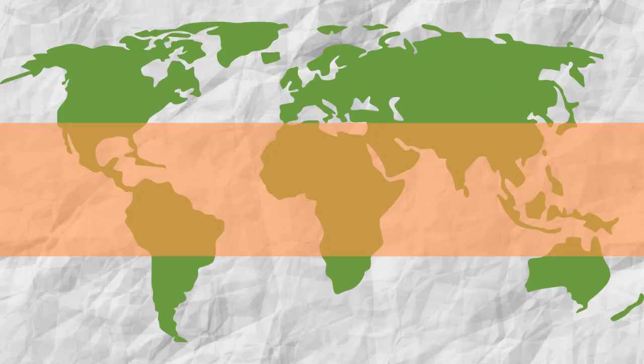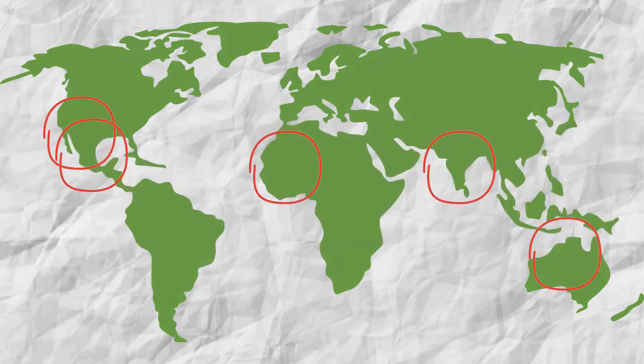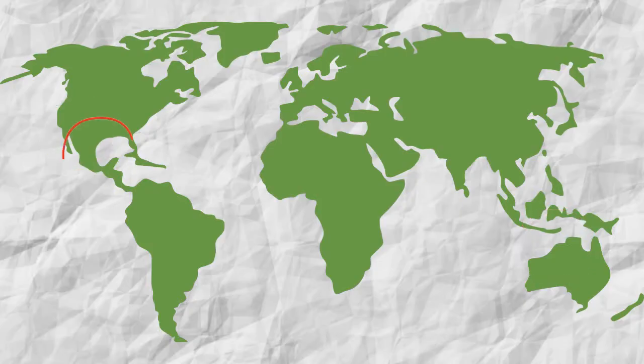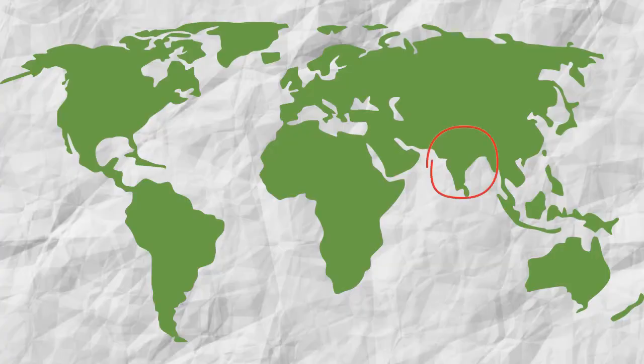So where does this all happen? Monsoons usually happen over the tropical region in that equatorial belt. Monsoons happen wherever there is a large piece of land sticking out into the ocean. So this happens over India, the bulge of Africa, Australia, and southwestern United States and northwestern Mexico. For the rest of this video, I'm going to be focusing on South Asia or India, just for the sake of simplicity.